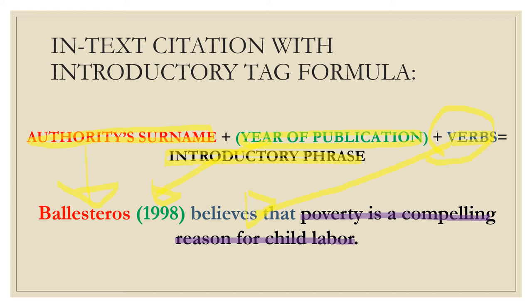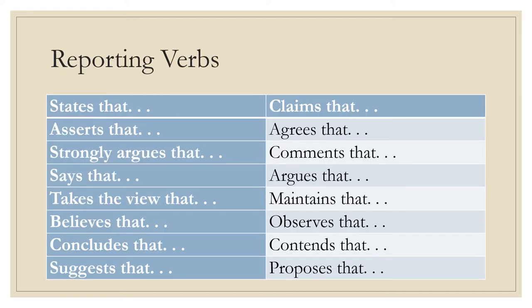This is just an easy step for you to avoid plagiarism. Once you follow this formula, you will not be accused of plagiarism. These are examples of reporting verbs you can alternate: states that, asserts that, strongly argues that, says that, takes the view that, believes that, concludes that, suggests that, claims that, agrees that, comments that, argues that, maintains that, observes that, contends that, proposes that.